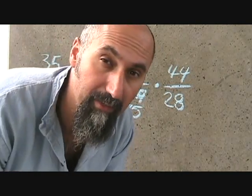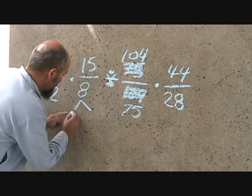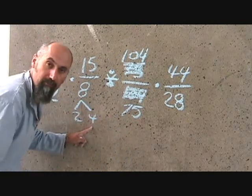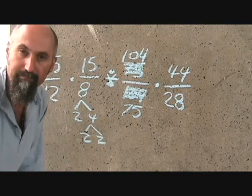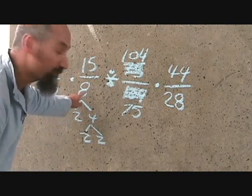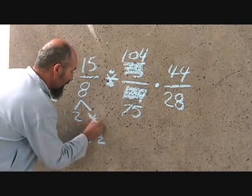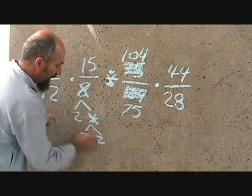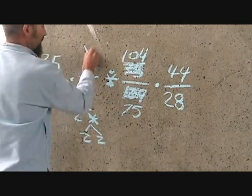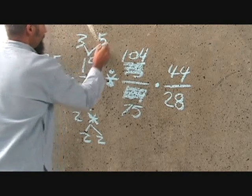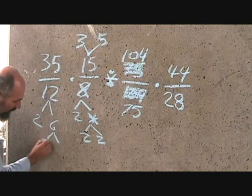Now we're going to start breaking them down to their prime numbers. Eight is two times four; four is two times two, so eight is two times two times two. We no longer have a four — four became two times two, so it's gone. Fifteen is three times five. Twelve is two times six, and six is two times three.